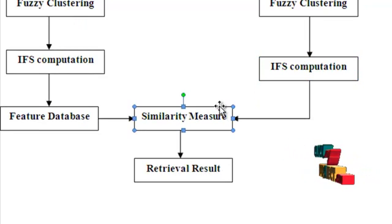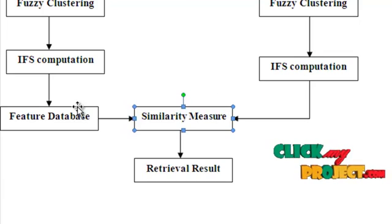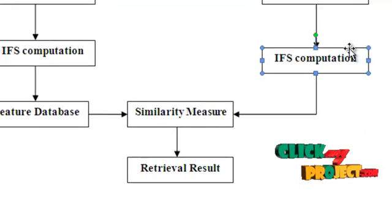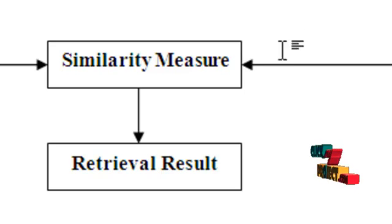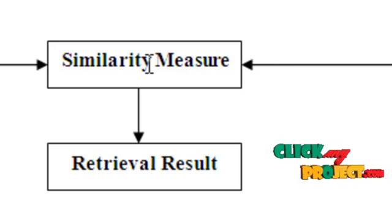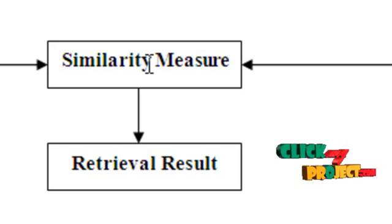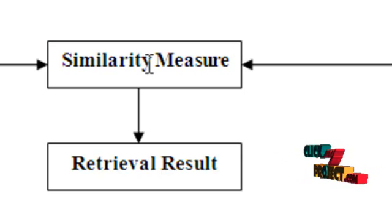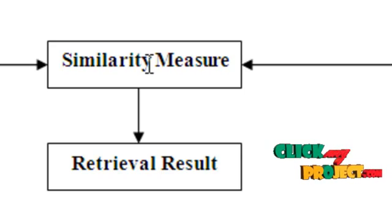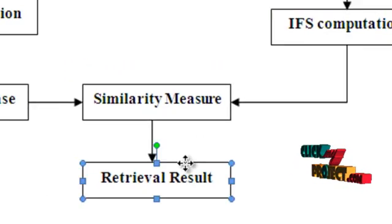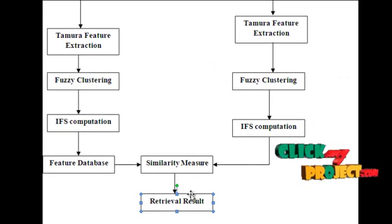Now we come to the main block: similarity measure. We have the feature database, and we have the feature vector that combines the membership and non-membership degree for the given query image. We compute the similarity between the query image and all images in the database. The similarity measure is the computation of Euclidean distance. The nearest neighbors are considered as relevant images, and with the index obtained from this block, we can retrieve the relevant images from the image database. The retrieved images are then displayed in a separate figure window to satisfy the user requirements.